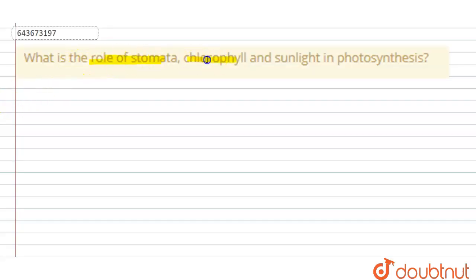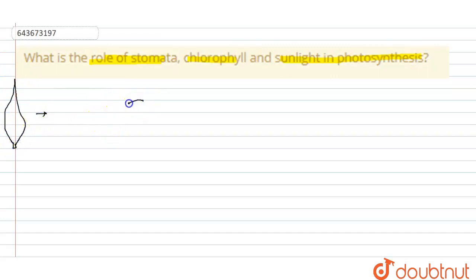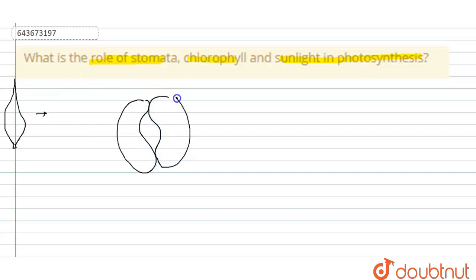The question asks about the role of stomata, chlorophyll, and sunlight in photosynthesis. We'll take a cut section of a leaf. The cut section shows us the presence of two bean-shaped structures called guard cells.